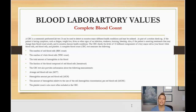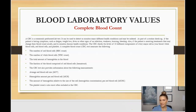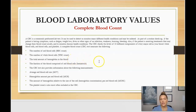The CBC may also be ordered if the patient is receiving treatments that may change their blood count results, to help monitor chronic health conditions. The CBC checks for levels of ten different components of every major cell in your blood — the white blood cells, the red blood cells, and your platelets. The CBC will show you the number of red blood cells, the number of white blood cells, and the total amount of hemoglobin in the blood.